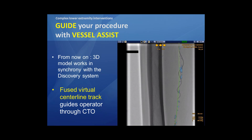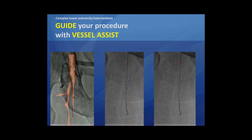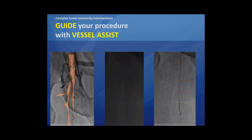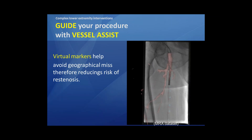So it's easy to follow dots instead of a full centerline over the occluded lumen. With wires supported by a catheter, it was quite straightforward and easy to follow dot by dot in order to recanalize this occlusion.